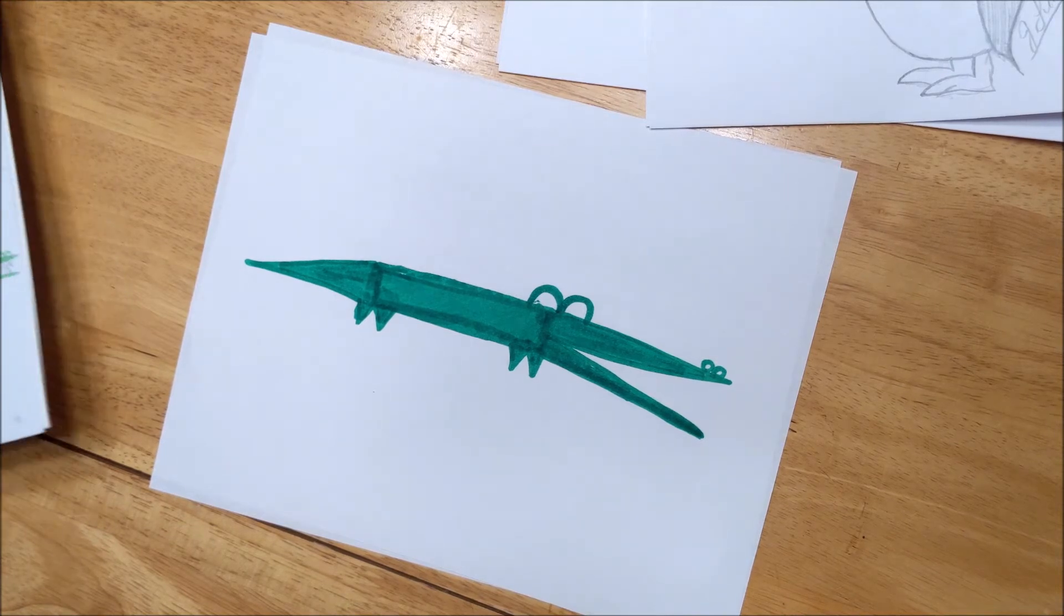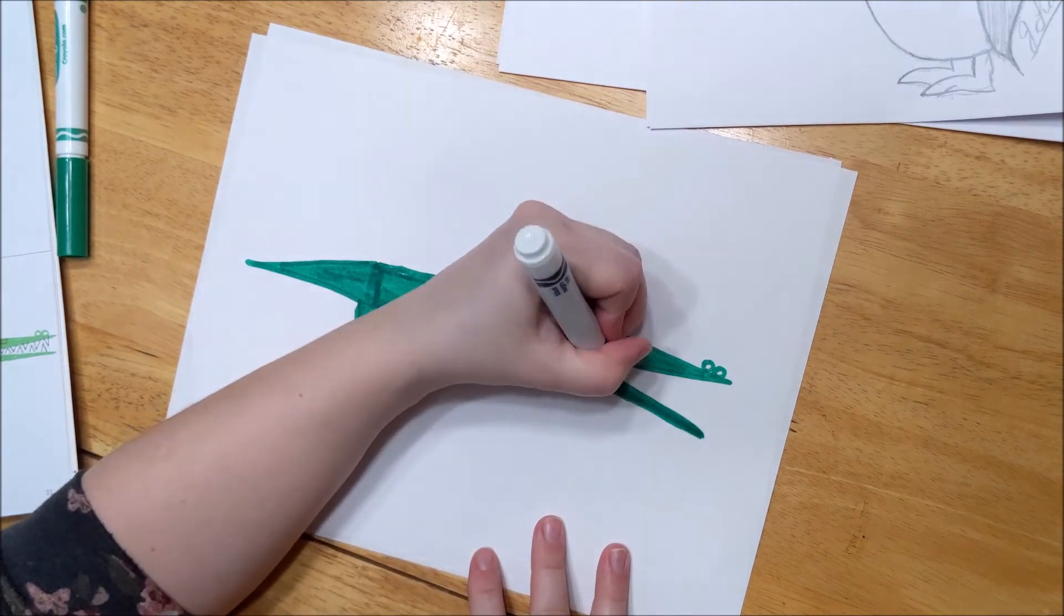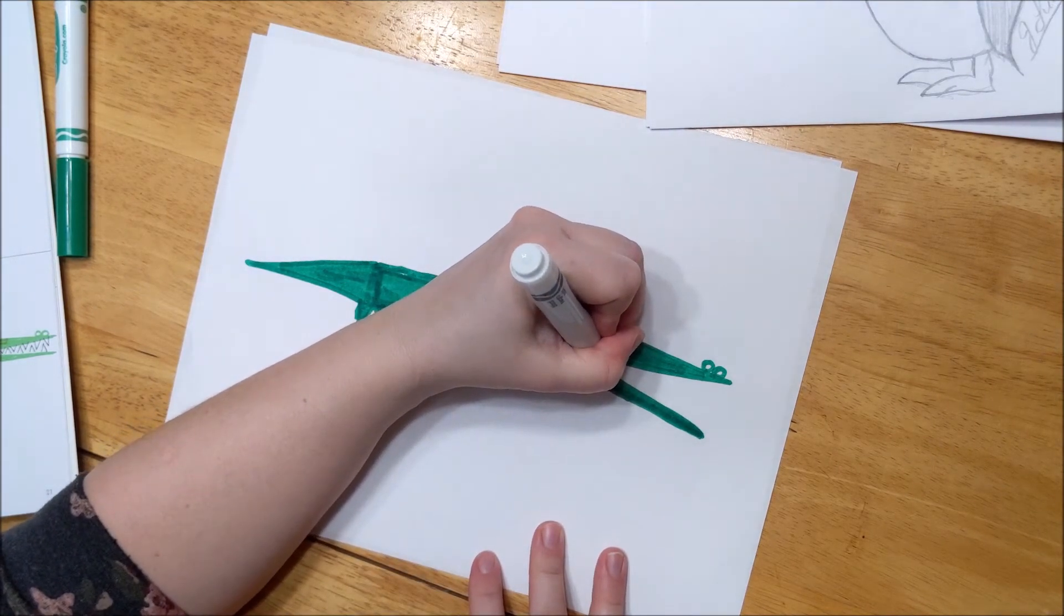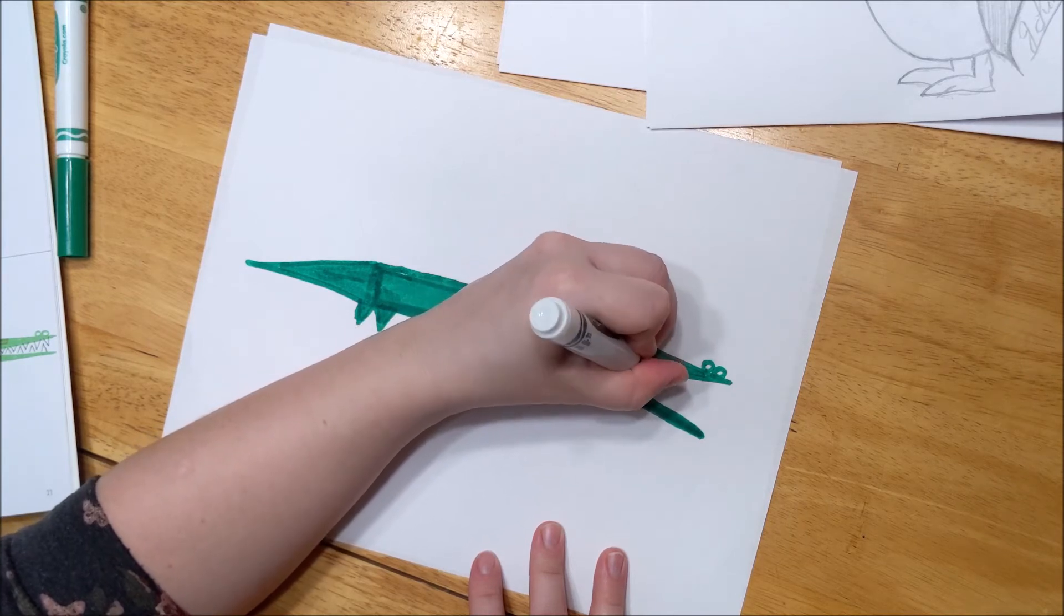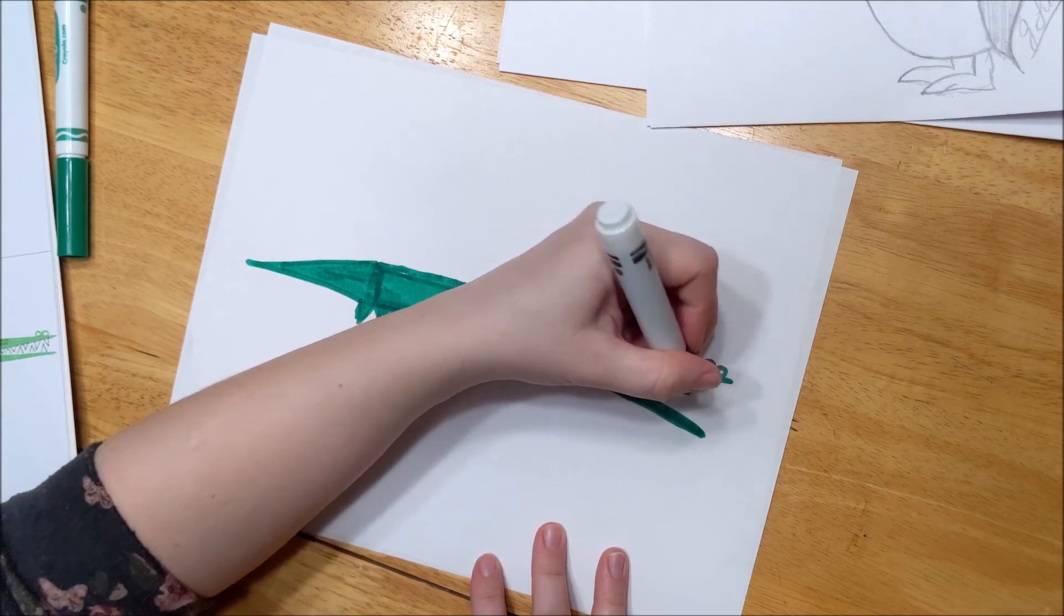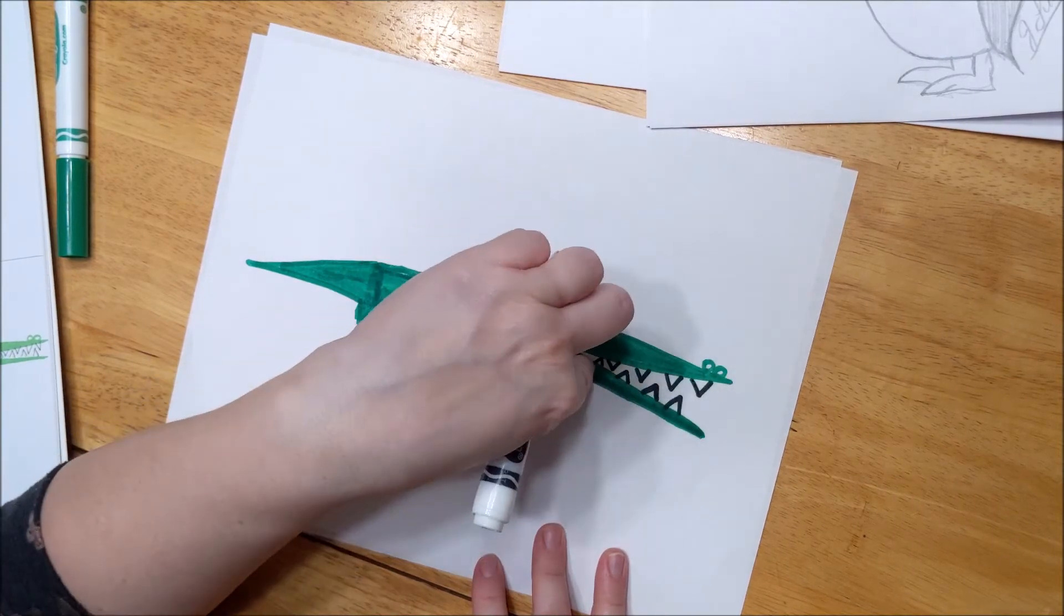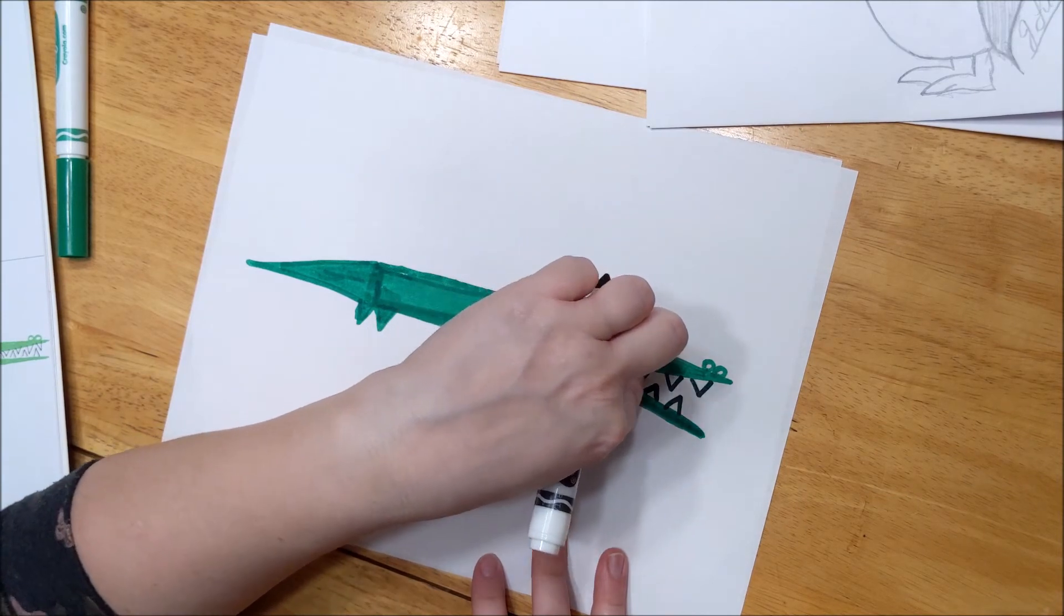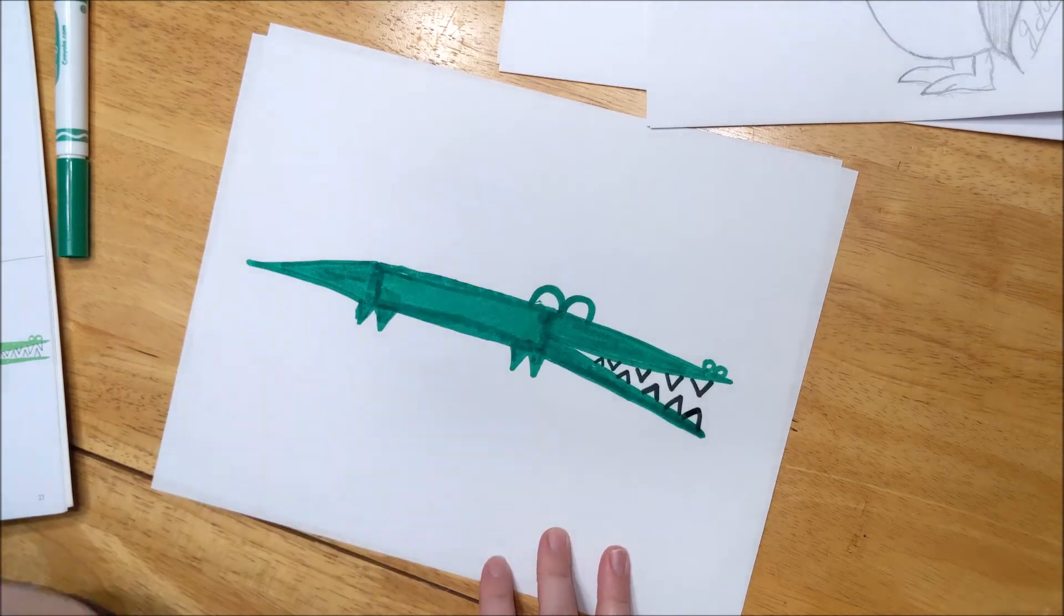And then we're going to take a black marker and do some triangles for his teeth. We're going to do one down here. We're going to do this all the way to the end. If you notice, I'm doing this side first, then up here, down here, down here. We have some triangles that are right side up and some that are upside down.